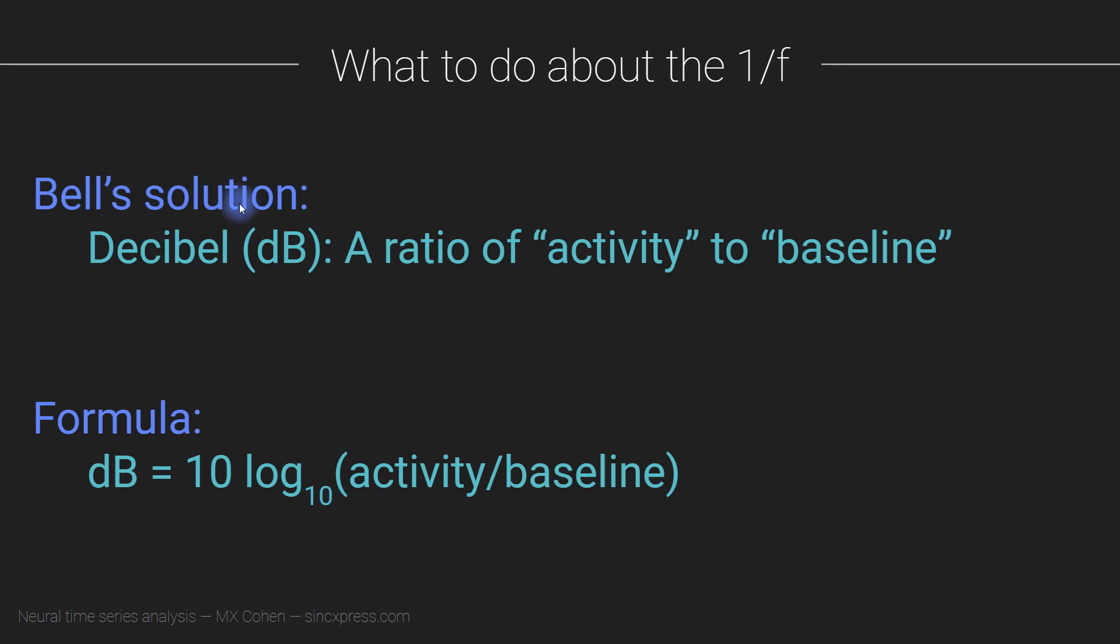So with that tangent aside, Bell's solution, which is what we are going to adopt, is to compute a ratio of activity of time frequency power. So we call this a bell named after Alexander Graham Bell. And it's a decibel because it's multiplied by 10. So then there's 10 of these bells. So here is the formula for a decibel. It is 10 times the log 10 of this ratio, the activity over the baseline. And this is referring to power. So this is time frequency power divided by time frequency power at the same frequency in some baseline time window. Now, the key part of this formula here is activity divided by baseline. This 10 log 10 stuff is more convention that we can call it a decibel. But this is really the important part activity divided by the baseline.